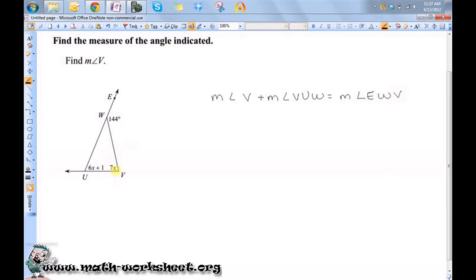Now I'm just going to substitute in the expressions for each of these. So V is 7X, VUW is 6X plus 1, and EWV is 144.